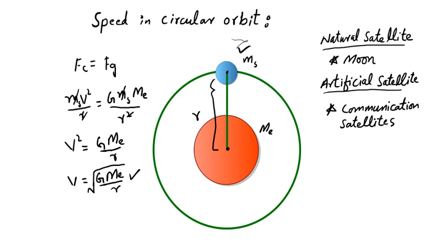This equation applies whether it is the moon or any artificial satellite. It shows that the speed depends on the distance R from the center of the Earth to the satellite, and it does not depend on the mass of the satellite.